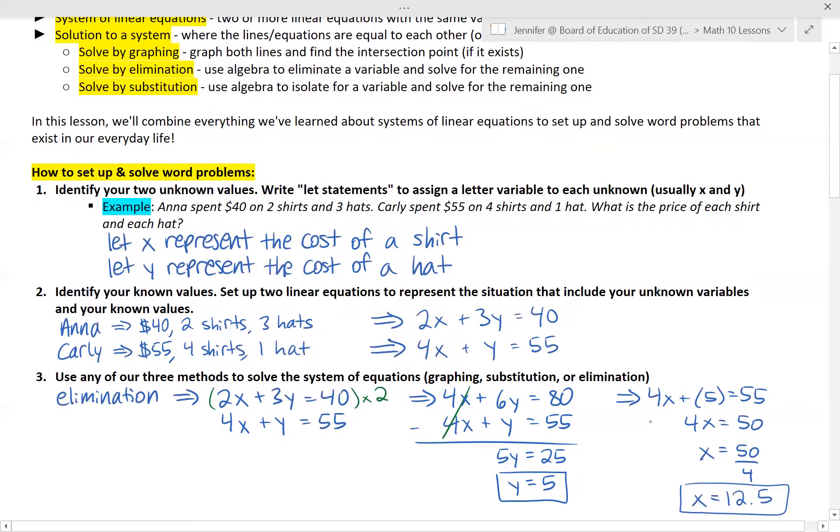And I use this value, sub it into either of the original equations, and I find that x is equal to 12 and a half. Normally you leave your answer in fraction form, but when there's context in a word problem you just want to ask yourself does it make more sense to have it in decimal form or fraction form. Remember x and y represent the price of a shirt or hat, so it doesn't really make sense to say the price is 50 over 4 or 25 over 2. It makes sense to represent price as a decimal because that's how we talk about dollars and cents. So that's why I converted it to a decimal of 12.5.